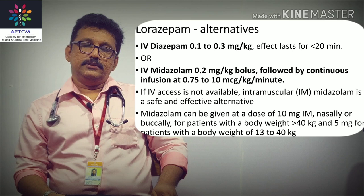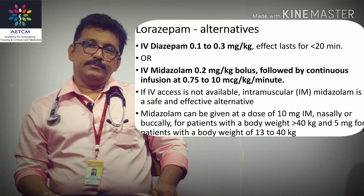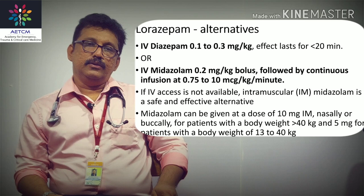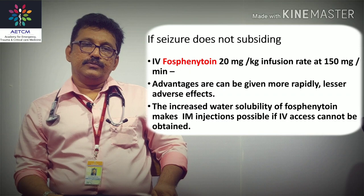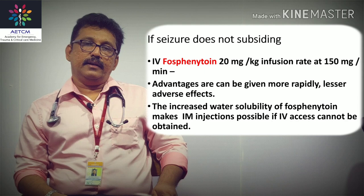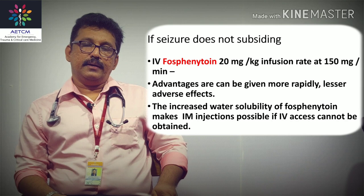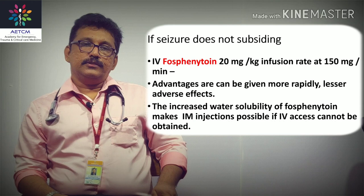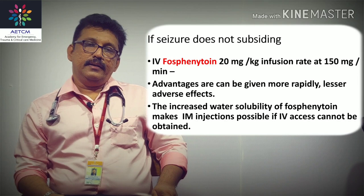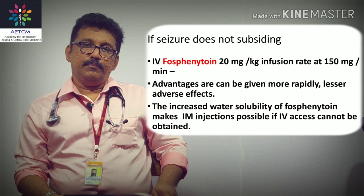If the seizure does not stop after 5 minutes, a second dose of lorazepam can be given. If that fails, proceed to definitive therapy: IV fosphenytoin 20 mg per kg at an infusion rate of 150 mg per minute. Fosphenytoin is preferred over phenytoin because it can be given faster and can be diluted in normal saline or dextrose.